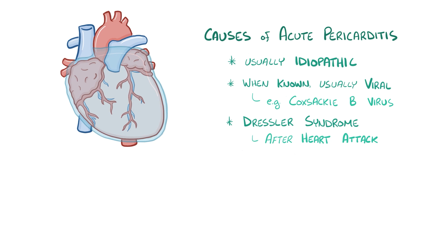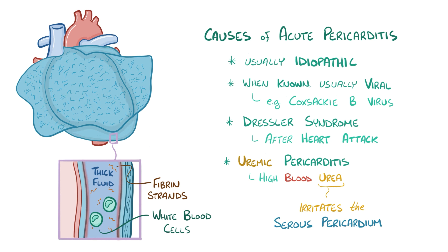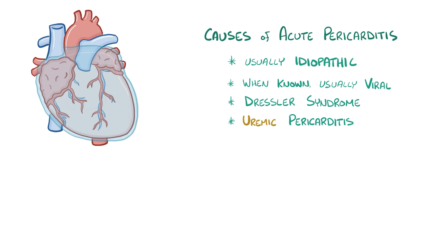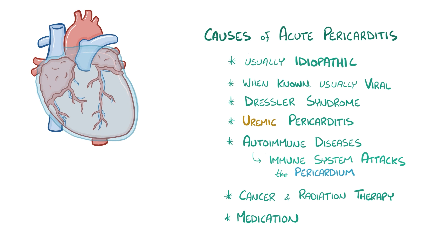Another cause, called uremic pericarditis, is when blood levels of urea, a nitrogen waste product, get really high due to kidney problems. The high levels of urea irritate the serous pericardium, making it secrete a thick pericardial fluid full of fibrin strands and white blood cells, giving the wall a buttered bread appearance. Pericarditis can also be seen in autoimmune diseases like rheumatoid arthritis, scleroderma, or systemic lupus erythematosus, as well as cancers like lung cancer and lymphoma, radiation therapy in the chest, and medications like penicillin and certain anticonvulsants.